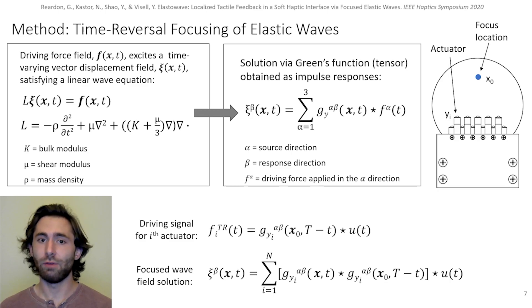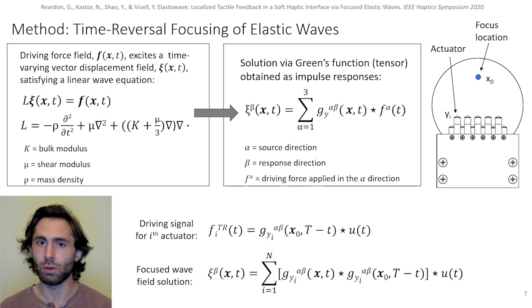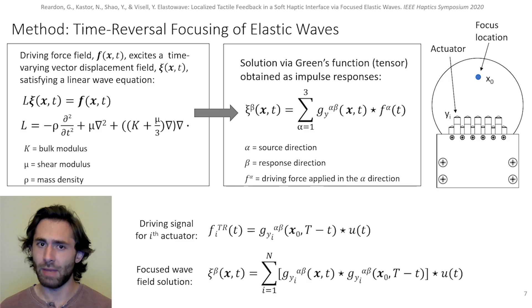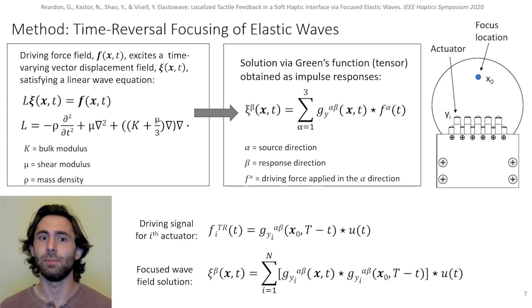At the focus location x0, the term in the brackets becomes the autocorrelation of the impulse response between the actuator and the focus location. This implies that our time-reversed impulse responses compose a spatiotemporal matched filter and allow us to maximally focus energy at a remote location at time t.